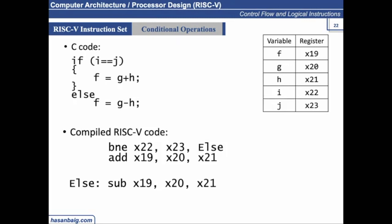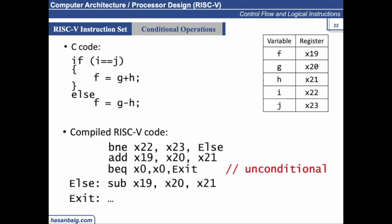We have studied one important register: x0. The suggestion is: BEQ x0, x0, exit. Exactly — branch if equal, x0, x0, exit. This is unconditionally jumping past the next instruction. The contents of x0 are always 0, so comparing x0 with x0 will always satisfy. This is how we use the x0 register to make an unconditional exit from a series of instructions.